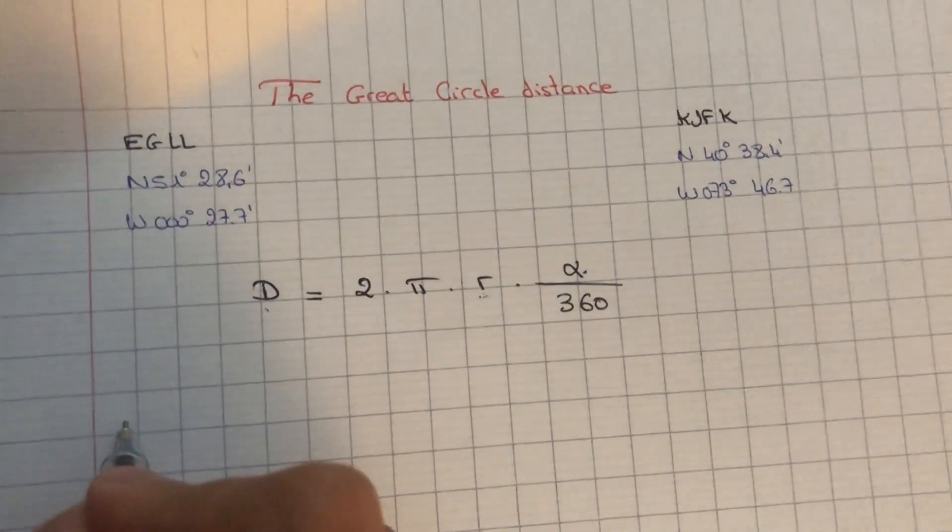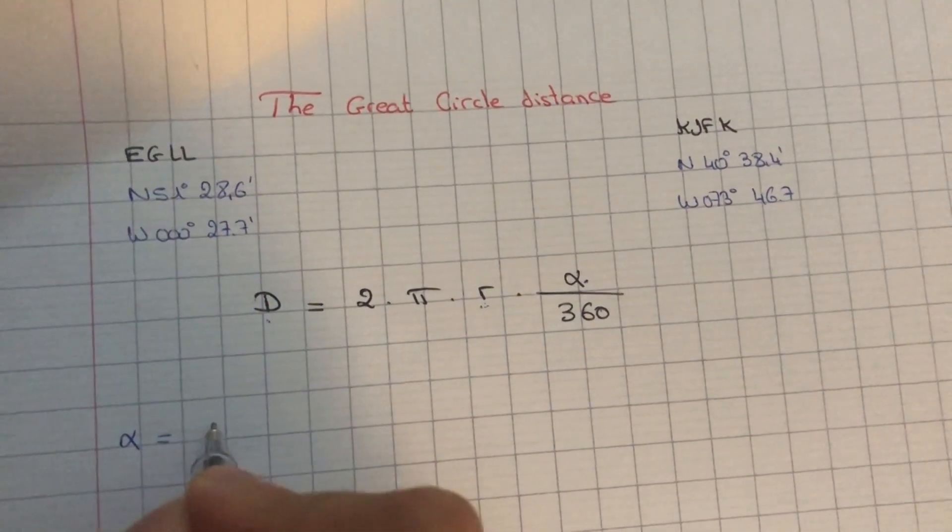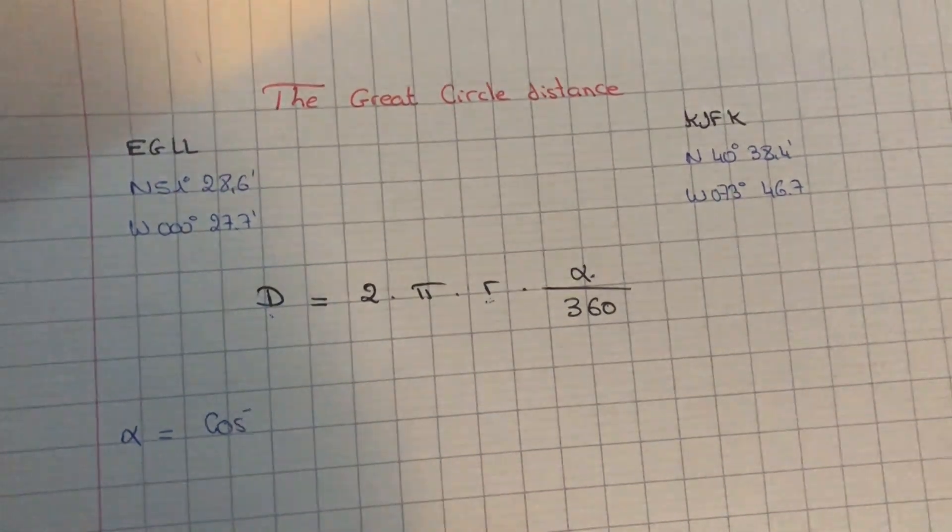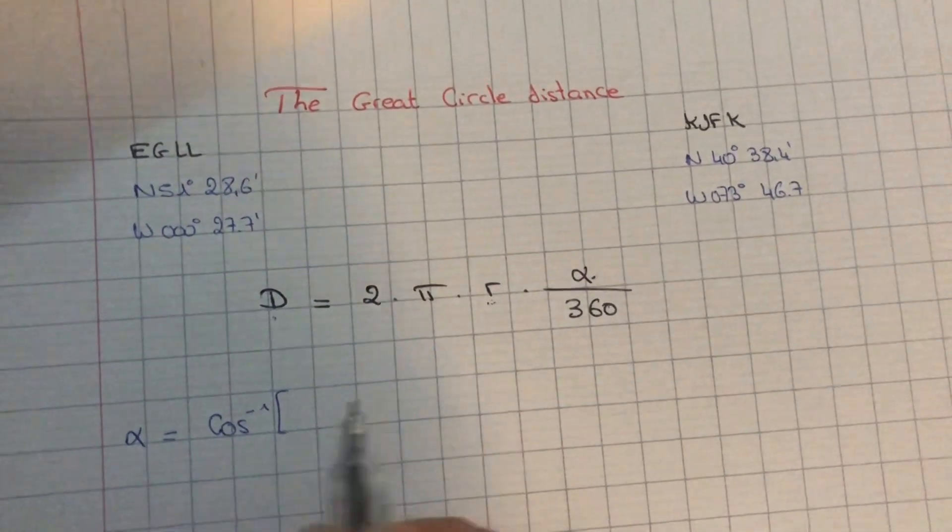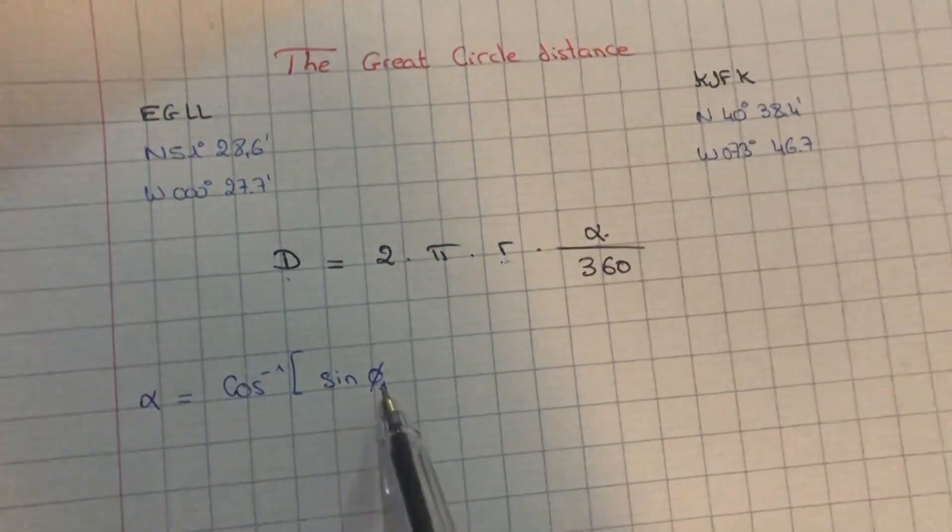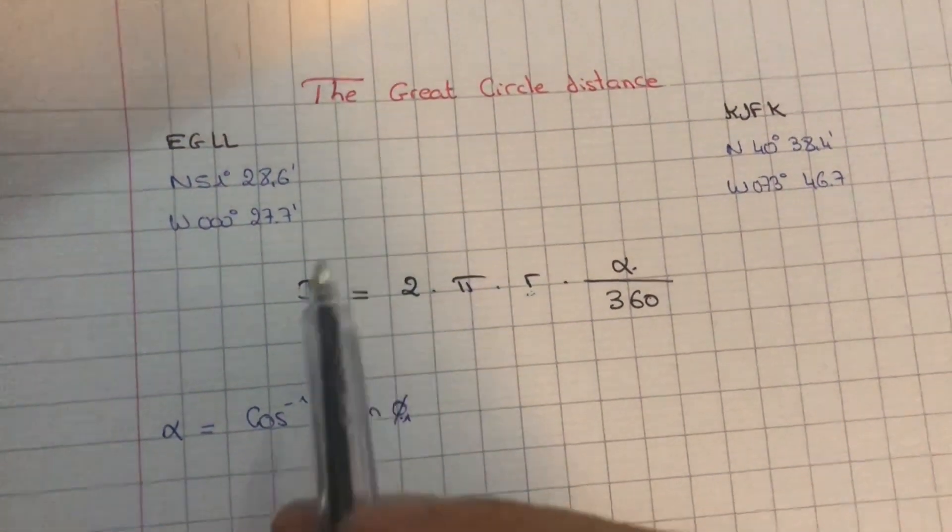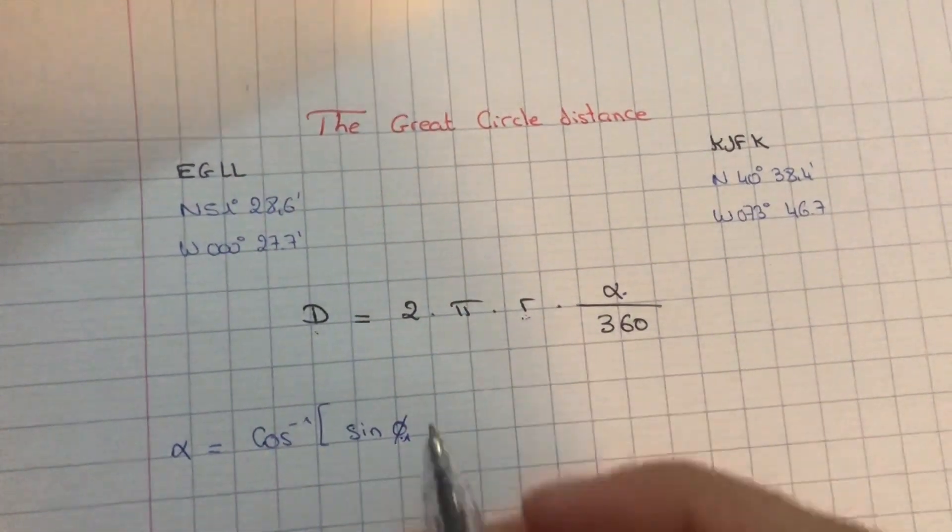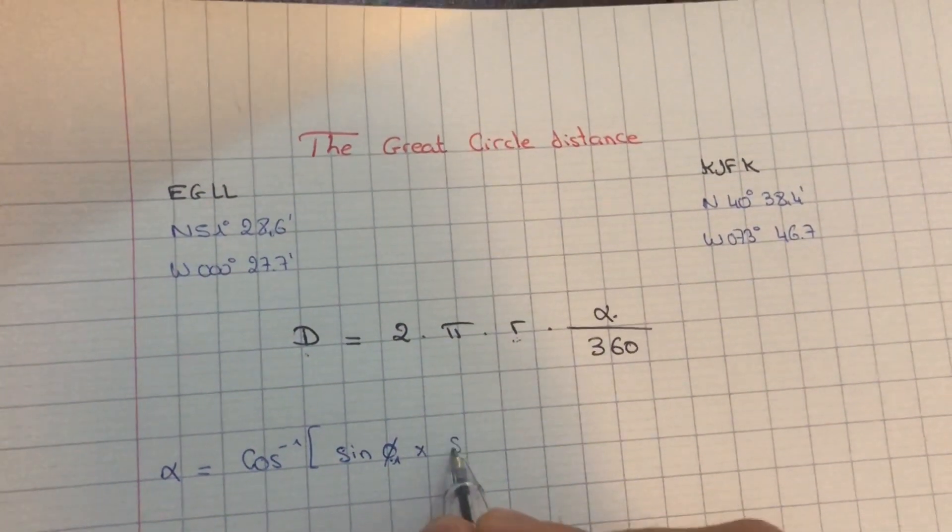So at first it looks easy, but there's a catch: we need to find this bad boy over here. So this angle equals the inverse cosine of the sine of the latitude of the first waypoint multiplied by the sine